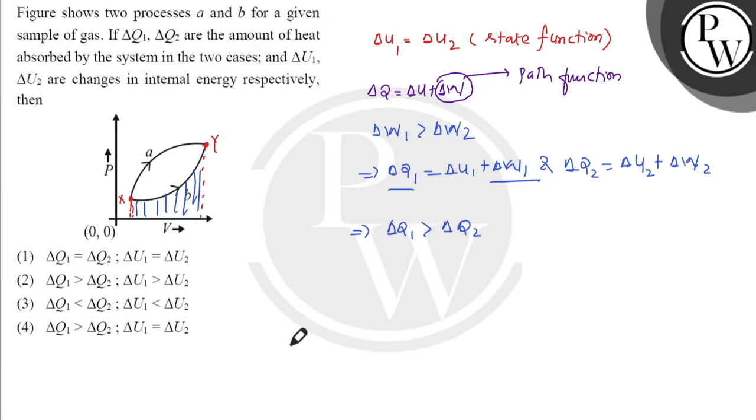So our answer will be ΔU1 equals ΔU2 and ΔQ1 is greater than ΔQ2, which is option number four. I hope you understood the solution. Thank you.